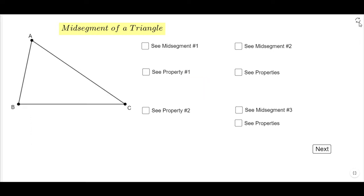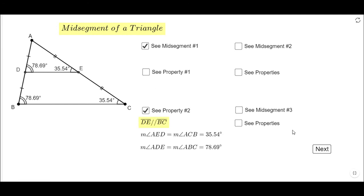Let's see the second property. The second property of this midsegment is that the midsegment is parallel to the third side. So DE is parallel to BC. In this case, these two segments are parallel segments.